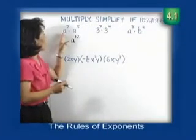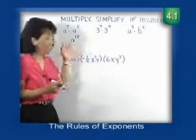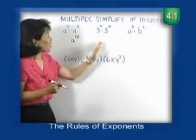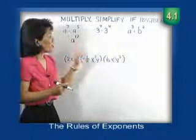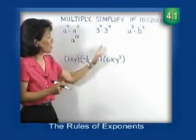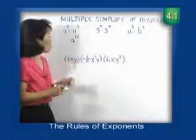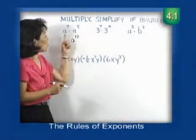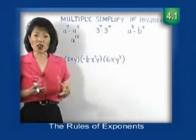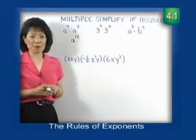What's happening here is that a to the seventh represents 7 a's lined up, and a to the fifth is 5 more. So how many do you have total? You've got 7 a's and 5 more a's — 12 a's total. That's why the rule is: when you multiply these monomials, as long as the bases are the same, you simply add the exponents.